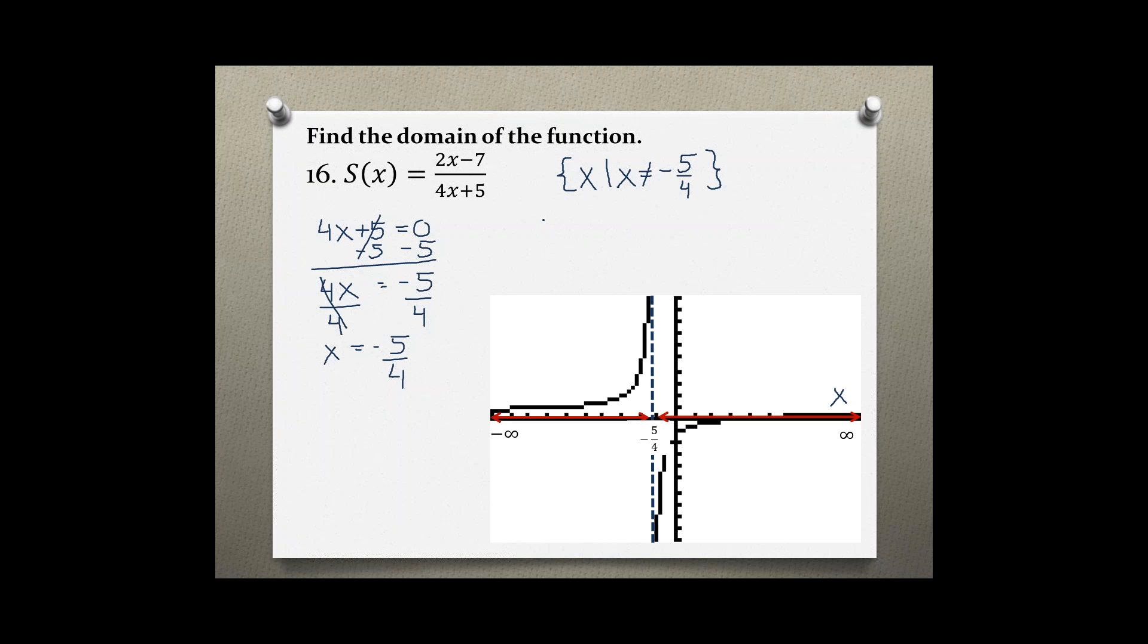And in interval notation, you read the graph from the left, so the values of x starting at negative infinity, then they go to -5/4. -5/4 is not included, and they continue—indicating that with the union symbol. They continue at -5/4, but it's not included; that's shown by parentheses, and they go to positive infinity.